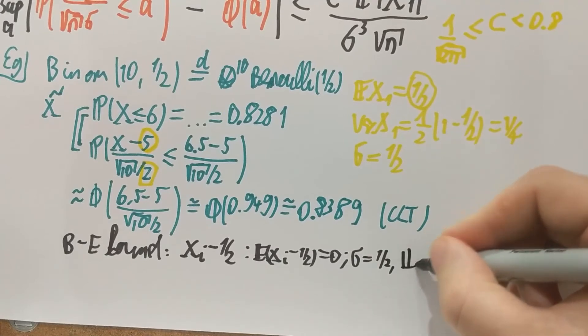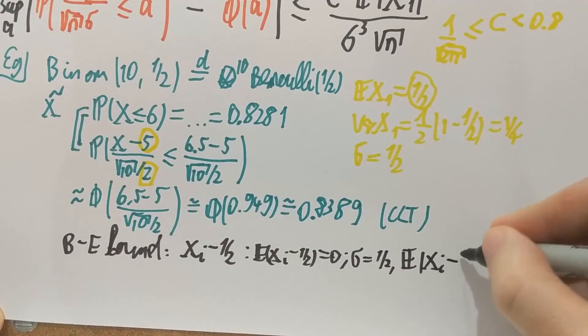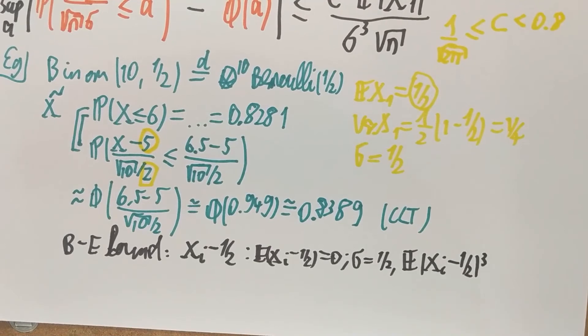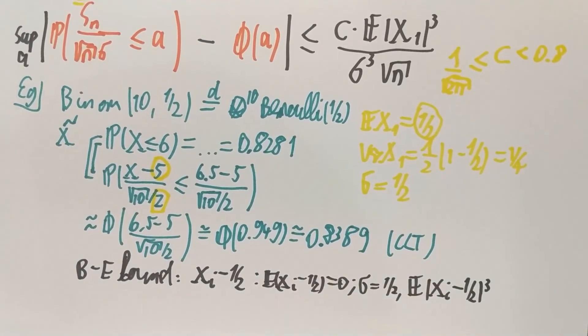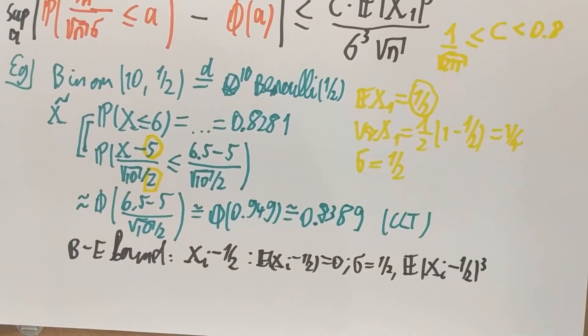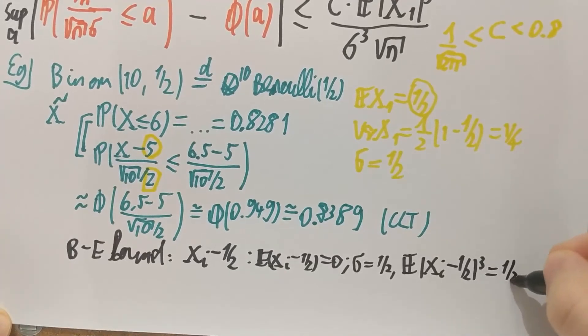E of Xᵢ minus one half is zero. The variance is unchanged, so sigma is still one half. And what is the third moment of Xᵢ minus one half? Why do we need that? Well, again, in the Berry-Esseen bound, we have the third absolute moment. So we need that here. And the third absolute moment of this, what is that? So Xᵢ can be zero, in which case this is one half cubed, or it can be one, in which case this is one half cubed. So there is not much to calculate here. In all cases, this is one half cubed.